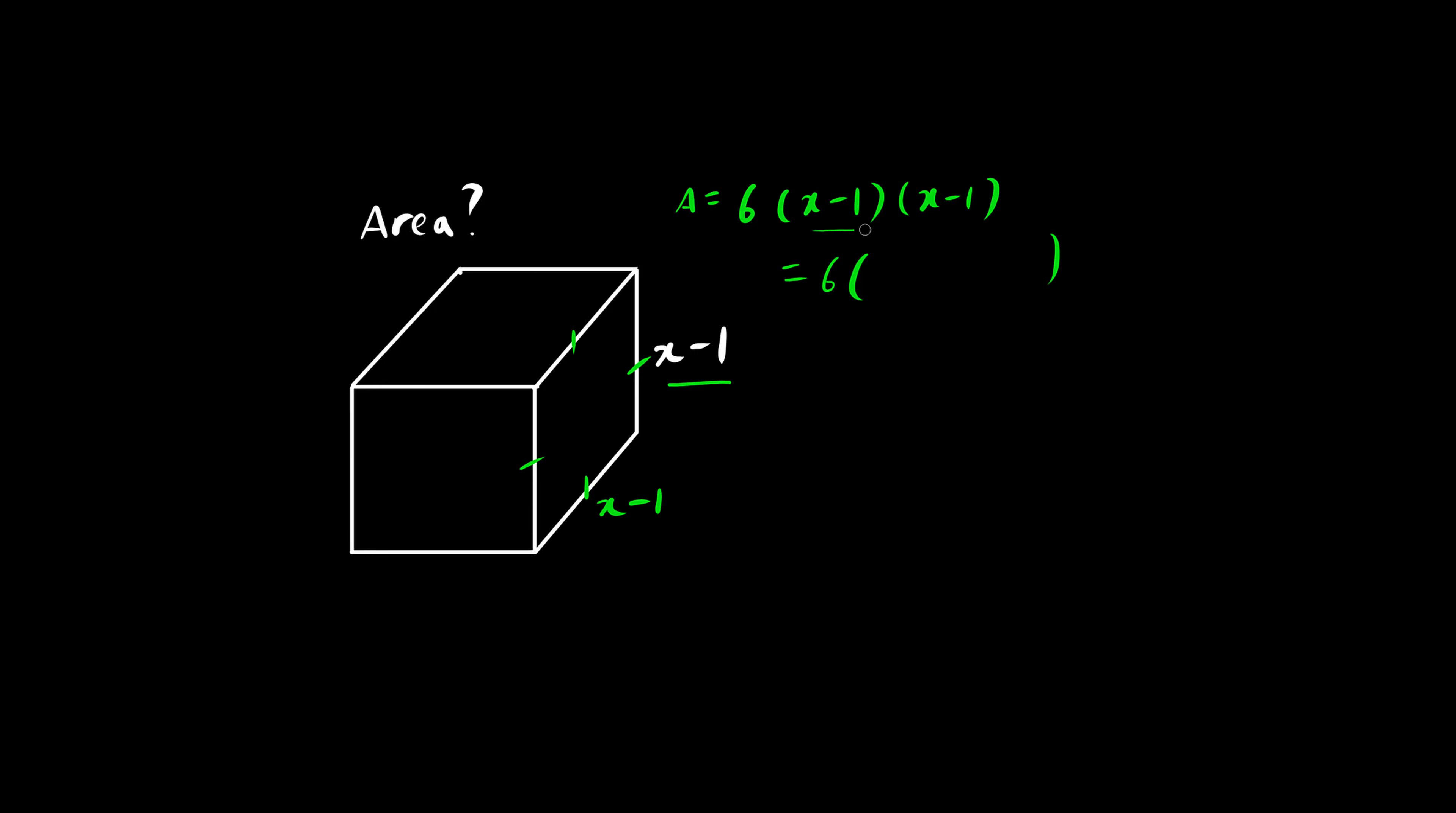Let's work on binomial times a binomial. We have x squared minus 2x plus 1. And now we use distribution. The final answer is 6x squared minus 12x plus 6.